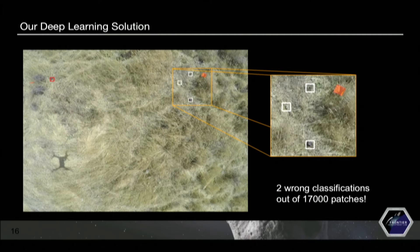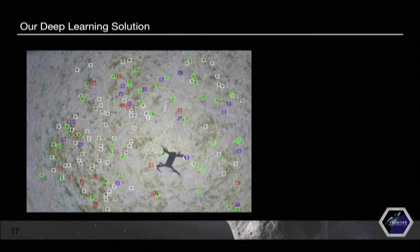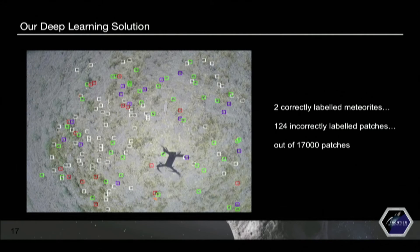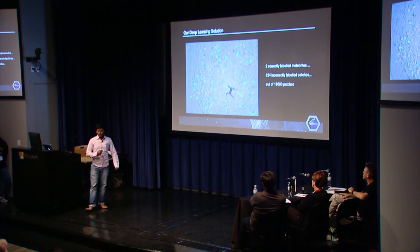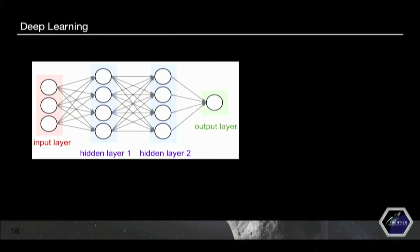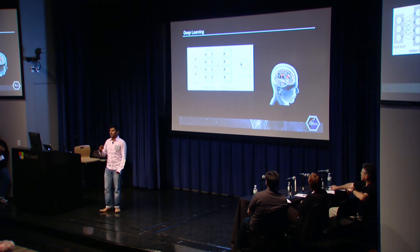However, this is another output image of our algorithm — much more annoying to look at, but it still finds the two meteorites. It gets 124 incorrect patches out of 17,000, which is still tiny. We've gone a long way, but there's still a little further to go. The solution involved deep learning, a very popular machine learning tool which combines simple linear and nonlinear operations to transform your data to get an output. The composition of these operations gives you layers — that's why it's called deep. One reason people were interested in this idea is because it loosely represents the way our brain processes data.